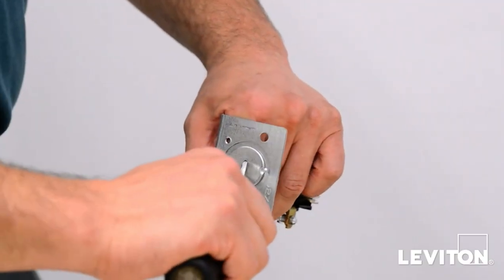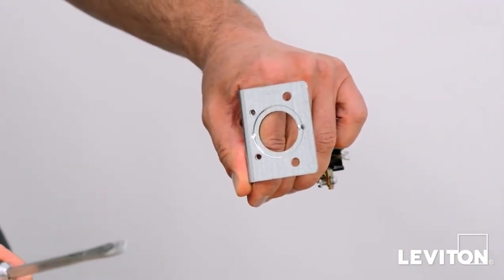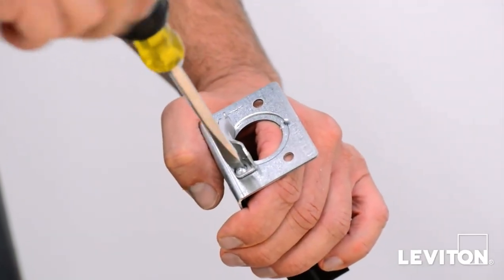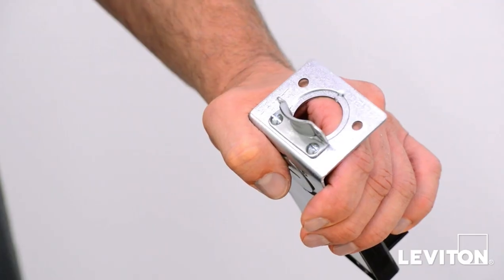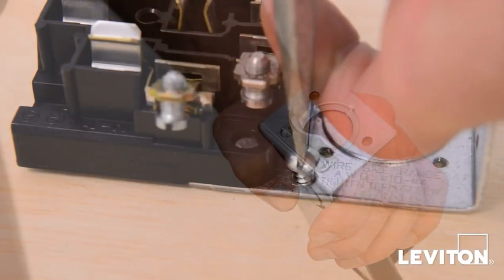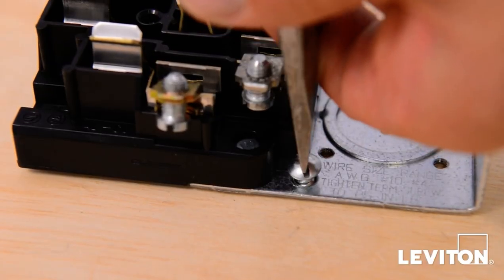Next, remove knockout in bottom plate for wall mounting or in back plate for floor mounting. Mount fixed half of strain relief to metal plate next to the removed knockout using short machine screws. Mount the outlet on the floor or wall using the wood screws provided.